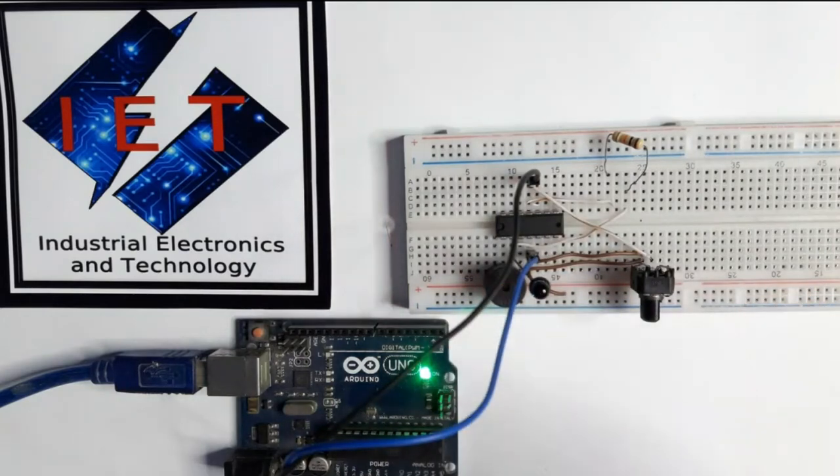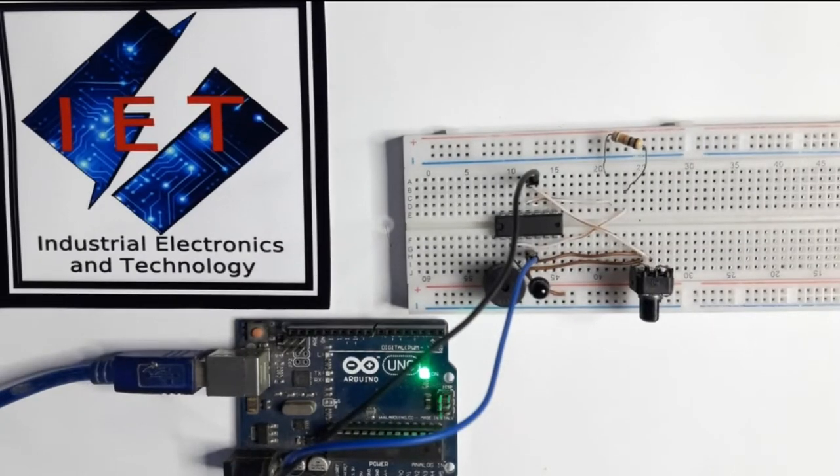Hello everyone, today we will learn how to make a simple fire alarm using a simple IR sensor and LM324 IC. Let's go for the components.